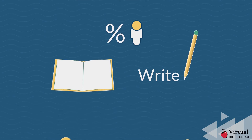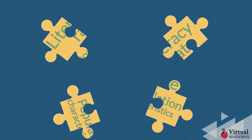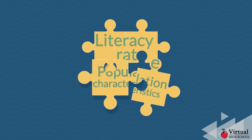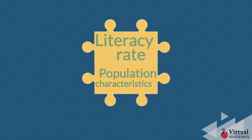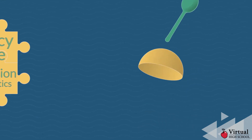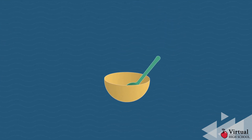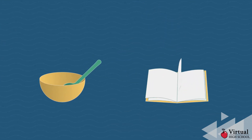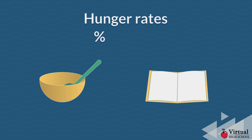What if you wanted to explore possible connections between the literacy rate and a population characteristic? Perhaps hunger is a characteristic that has a connection to literacy. Hunger rates reveal the percentage of people in a country who are undernourished.